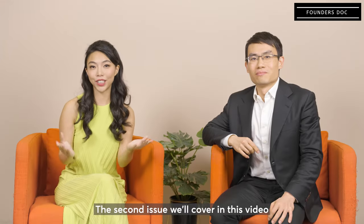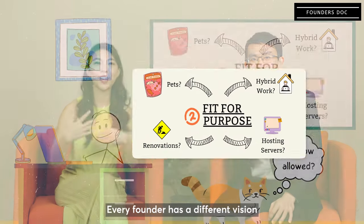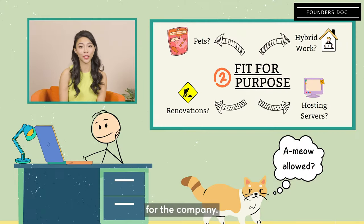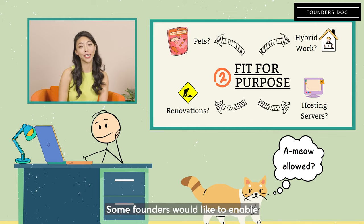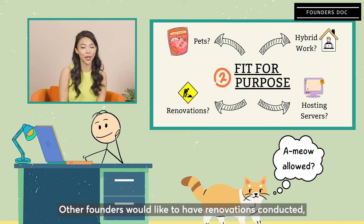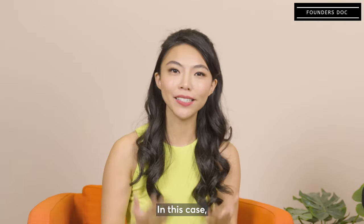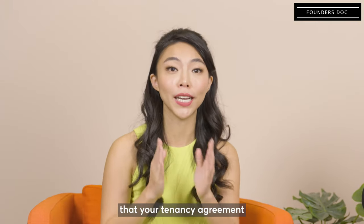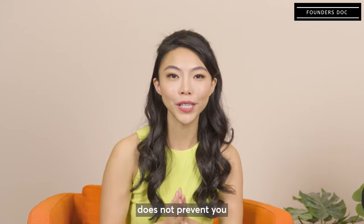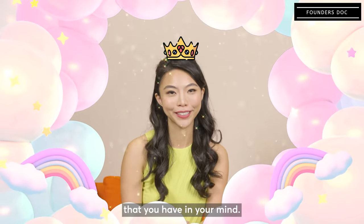The second issue we'll cover in this video is fit-for-purpose provisions. Every founder has a different vision for their company. Some founders would like to enable their employees to bring their pets to work. Other founders would like to have renovations conducted or perhaps a hybrid workplace environment. It's important to ensure that your tenancy agreement does not prevent you from achieving the dreams and goals that you have in your mind.